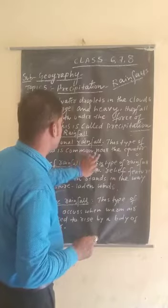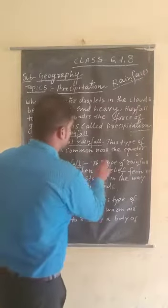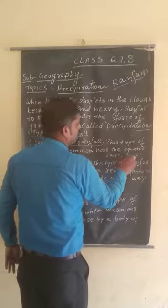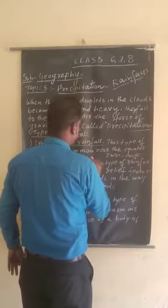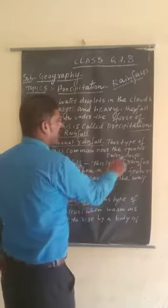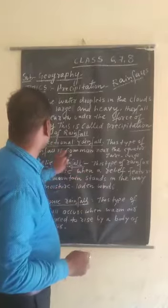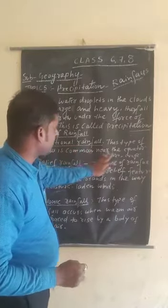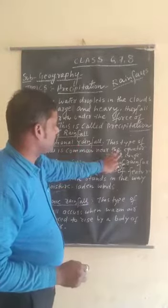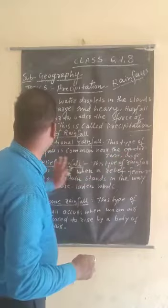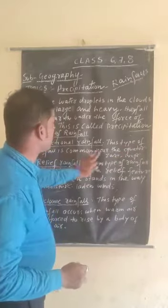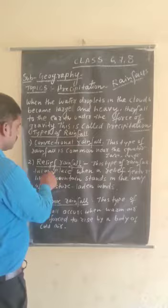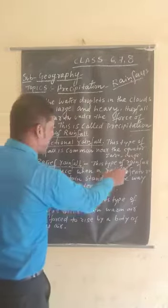When the area becomes too warm — for example, regions like the Congo — tropical rainfalls are mainly found there. That is why convectional rainfall is totally dependent on the equator region. This type of rainfall is common near the equator.